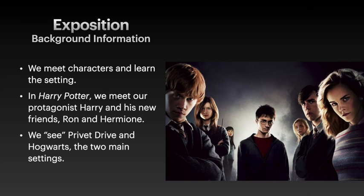Exposition is the background information of the plot that includes characters and setting. Everything you need to know about the characters and their histories are going to be revealed to you usually in the opening chapters or scenes if you're watching the movie. In Harry Potter, of course, one of the first people we meet is Harry Potter. We also meet his family, the Dursleys, who are not very nice. And early in the story, we also meet his new friends Ron and Hermione, and of course all of his peers at Hogwarts and his teachers. The very first place we see is Privet Drive, where he lives with the Dursleys, and we also get to see Hogwarts, which are the two main settings of this particular story.